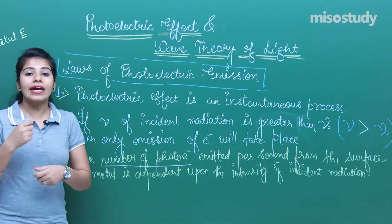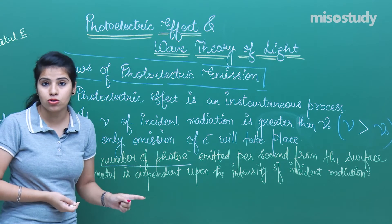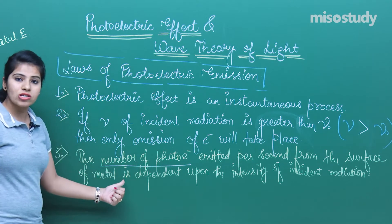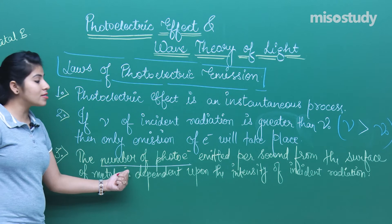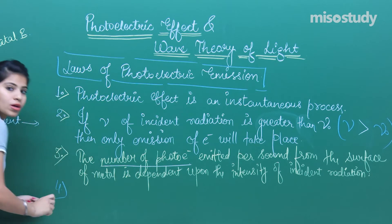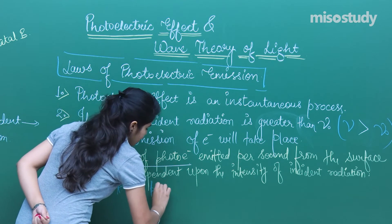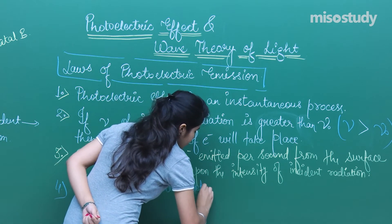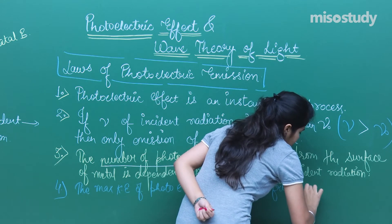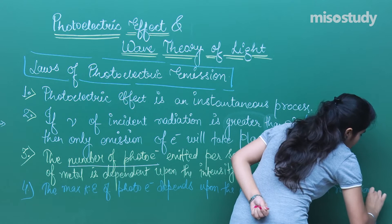The fourth law says that the kinetic energy with which these electrons are being emitted depends upon the frequency of the incident light and is independent of the intensity. This is just the opposite of the third law — the number of photoelectrons emitted depends on intensity and is independent of frequency, while the maximum kinetic energy of the photoelectrons depends upon the frequency of incident radiation. These are the four laws you should not forget whenever you are dealing with this chapter.